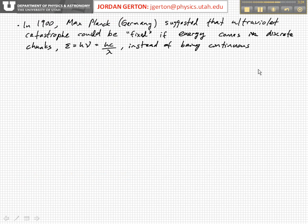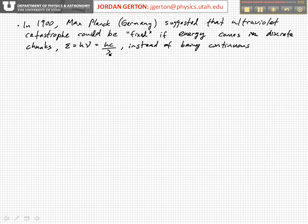What Max Planck showed is that if energy comes in discrete chunks or bits given by hν — Planck's constant times the frequency — where Planck's constant is a fundamental constant of nature, also equal to hc/λ, then if energy came in discrete chunks of these values instead of being continuous as expected from a wave, the ultraviolet catastrophe could be resolved. This is what Planck showed.